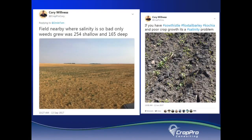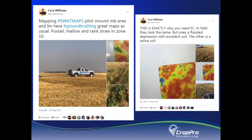It's very common when out ground truthing swap maps that in areas of salinity you'll find weeds such as kochia, foxtail barley, and sow thistle. In wet, high organic matter areas it's common to find weeds such as prostrate knotweed, plantain, hemp nettle, smartweed, roundleaf mallow, and chickweed. On hills and dry areas, it's more common to find weeds such as wild millet.